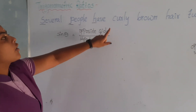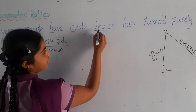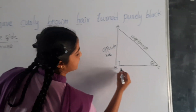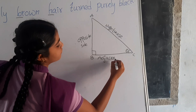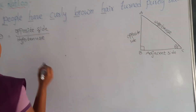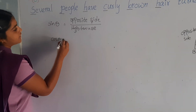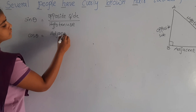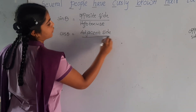Next, cos theta. Here C stands for cos theta, B stands for base, and H stands for hypotenuse. Base means adjacent side. So cos theta is equal to adjacent side by hypotenuse.